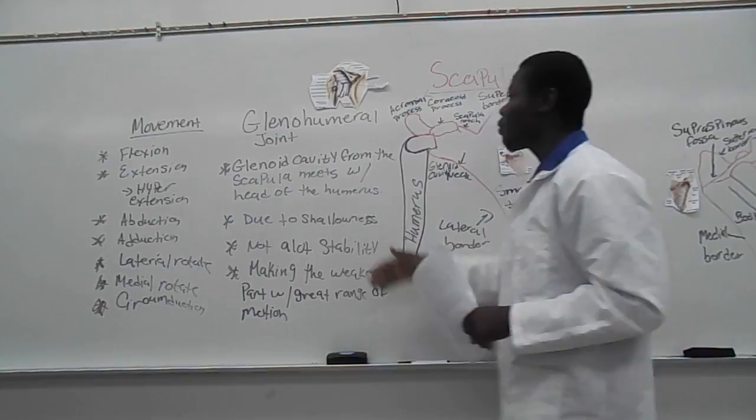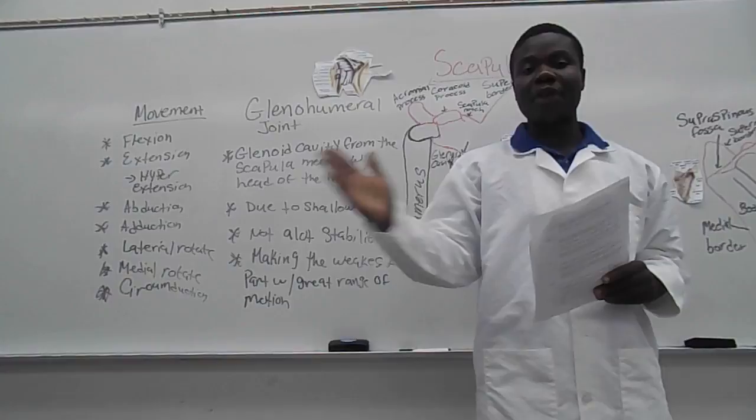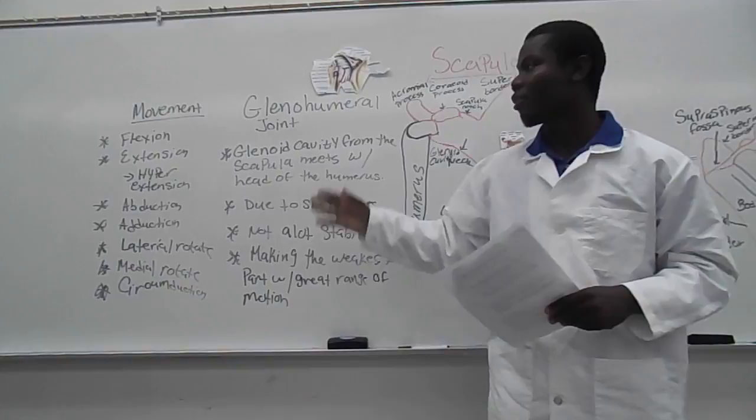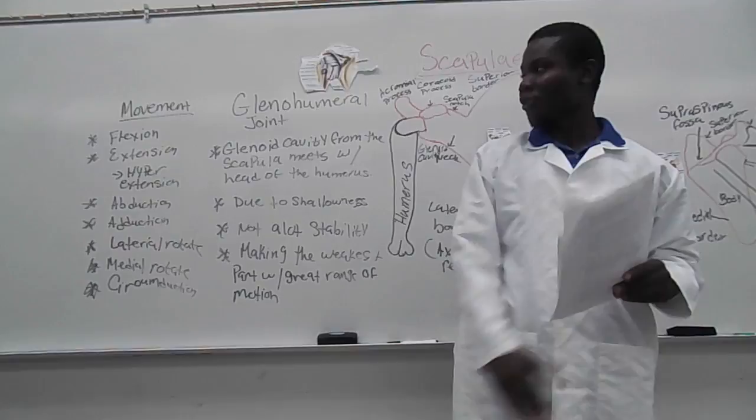One of the movements allowed due to the glenohumeral joint is flexion, extension, hyperextension, abduction, adduction, lateral rotation, medial rotation, and circumduction — which is a combination movement of all of those: flexion, extension, hyperextension, adduction, abduction, lateral, and medial rotation. So it's like a circle.